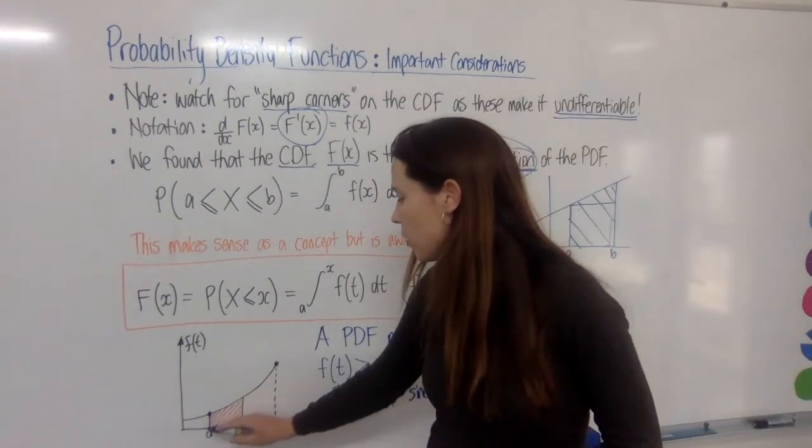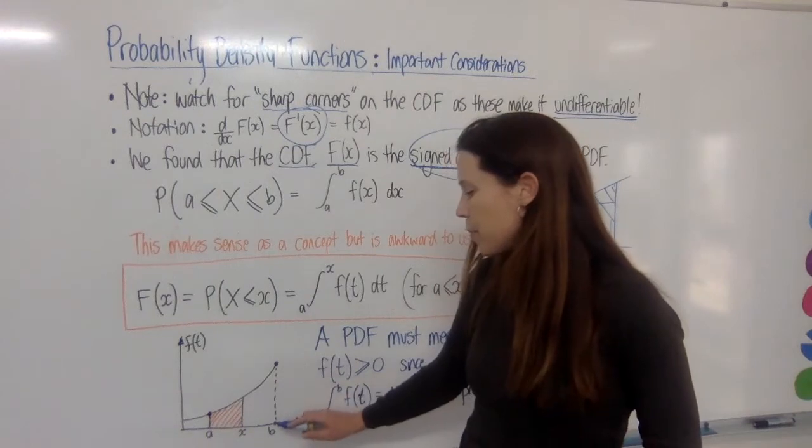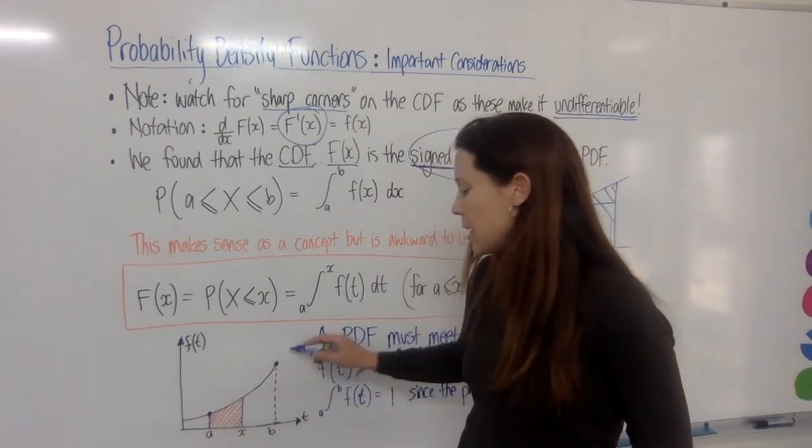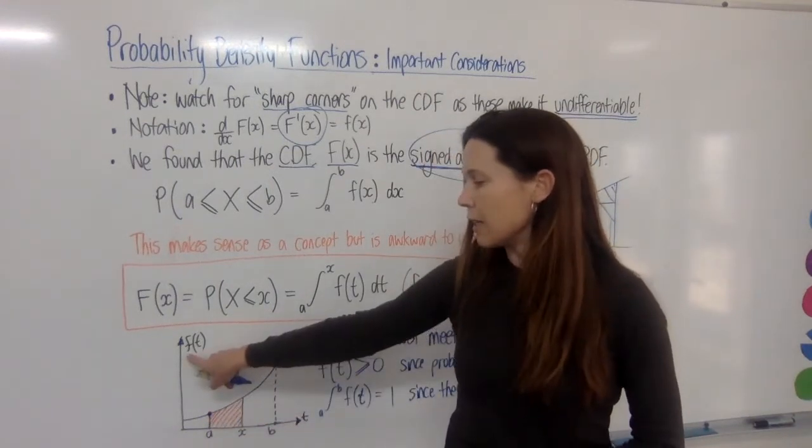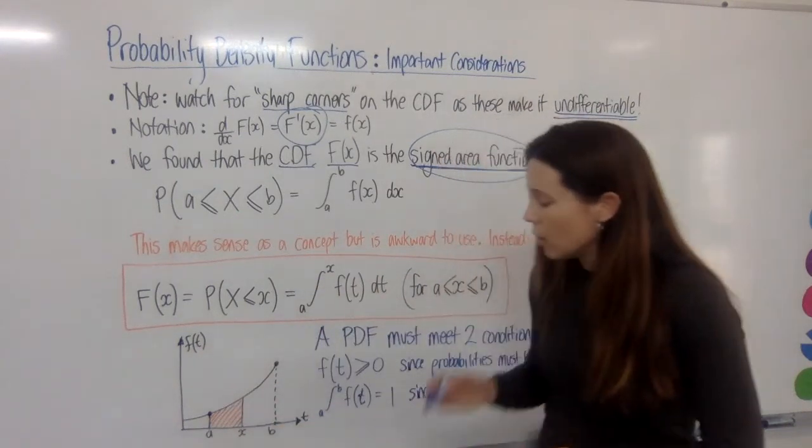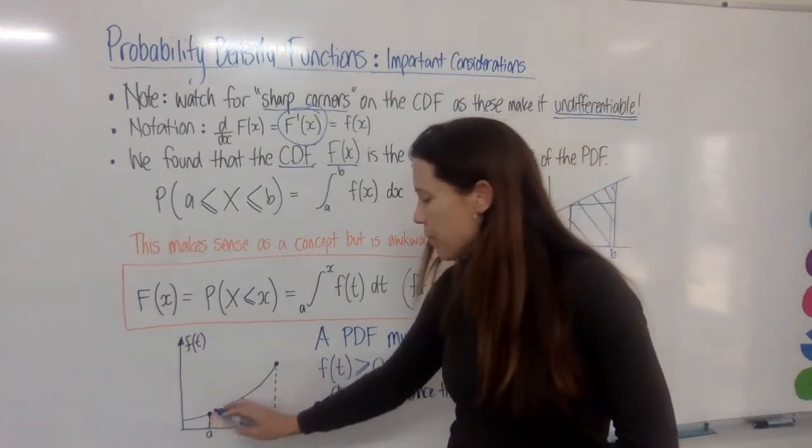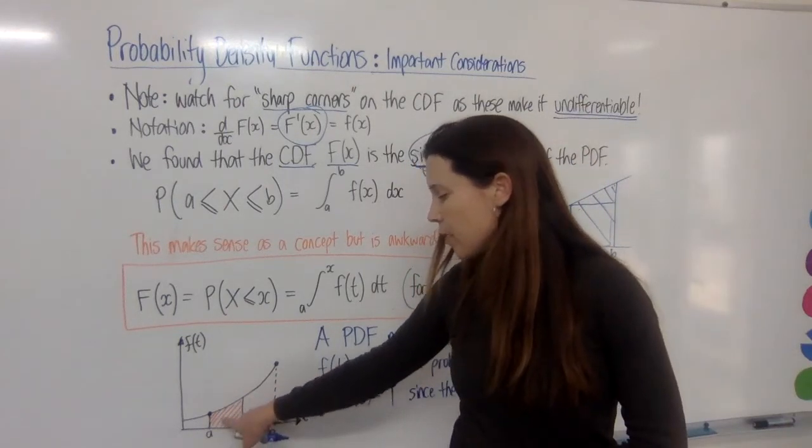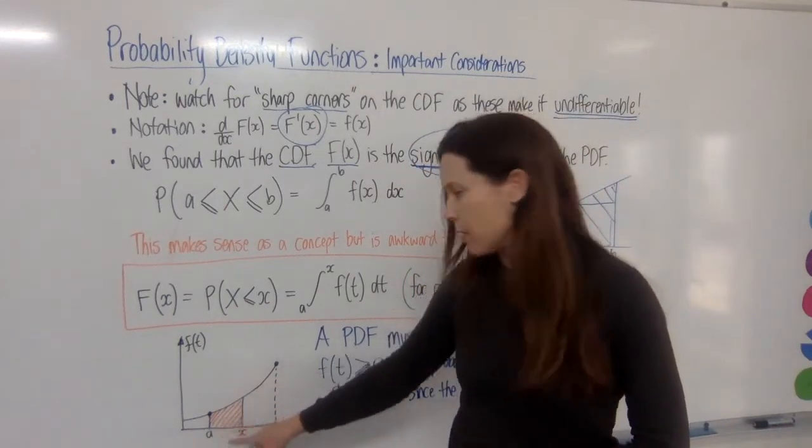And here is my PDF. I can tell because it's got little f of t here. Why have I used t? I'll get to that in a moment. But if I want to find the value of an area under the curve that's just in part of it here, it makes sense that this x could move around.